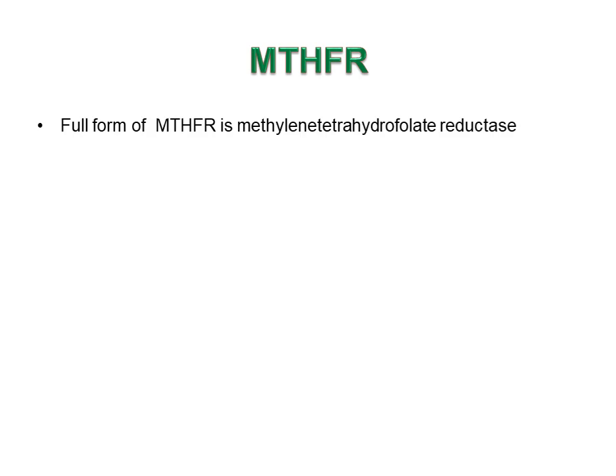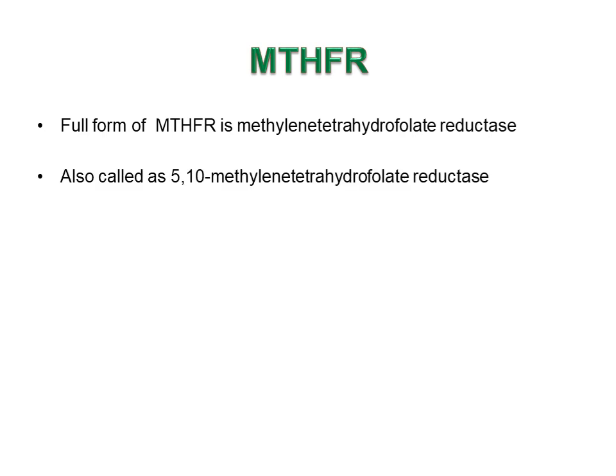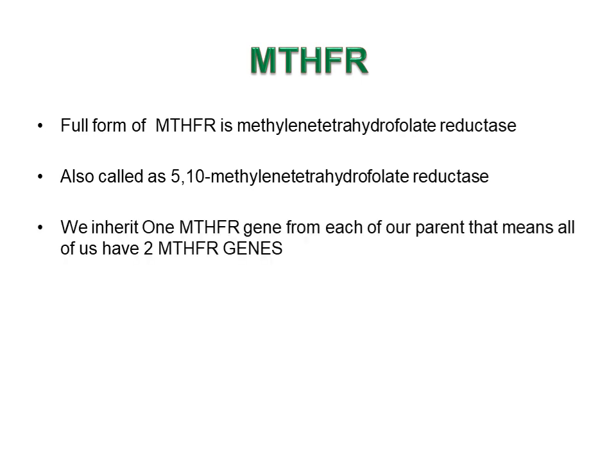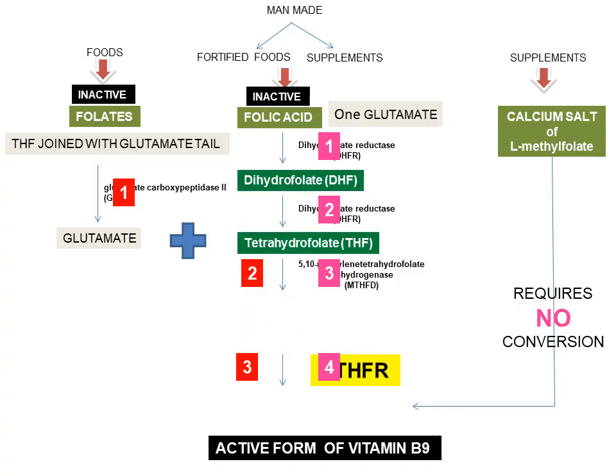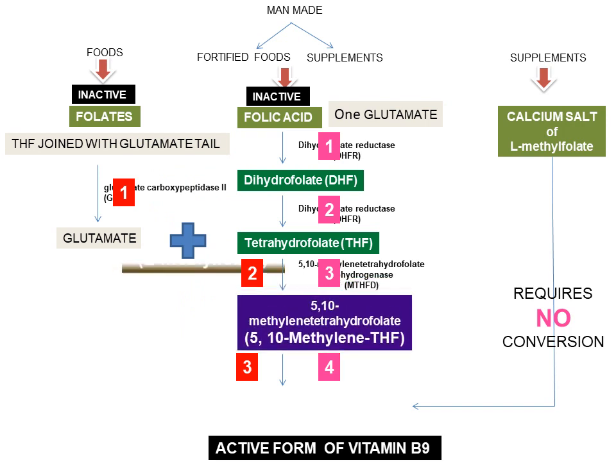Now let's learn about MTHFR. The full form of MTHFR is methylenetetrahydrofolate reductase, also called 5,10-methylenetetrahydrofolate reductase. We inherit one MTHFR gene from each parent, meaning all of us have two MTHFR genes. The MTHFR gene makes the enzyme methylenetetrahydrofolate reductase, or MTHFR enzyme. MTHFR enzyme is the most important enzyme — it is required for the conversion of 5,10-methylenetetrahydrofolate to L-methylfolate.